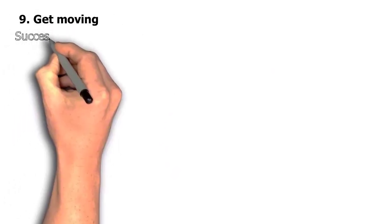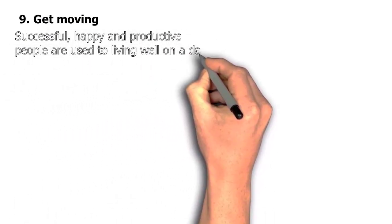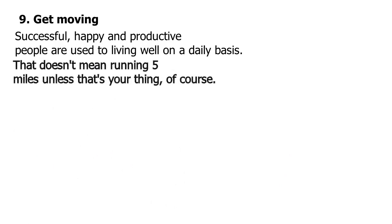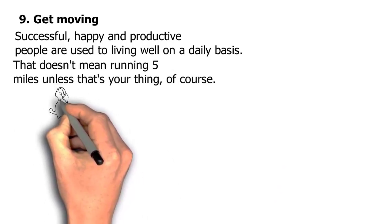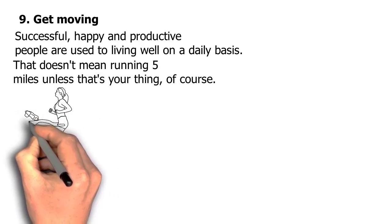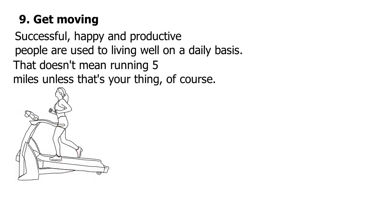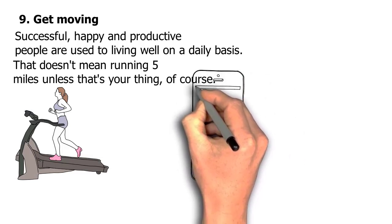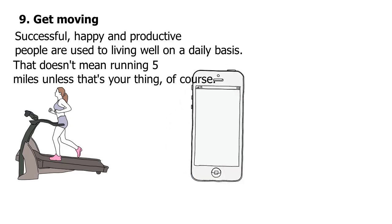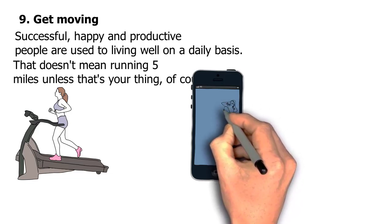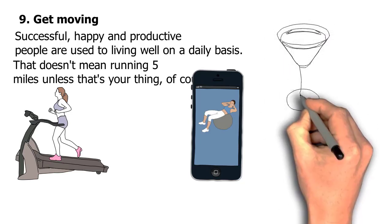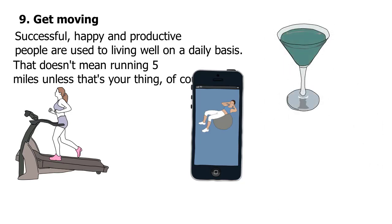Number nine, get moving. Successful, happy and productive people are used to living well on a daily basis. That doesn't mean running 5 miles, unless that's your thing, of course. There are incredible benefits to exercising for 10 minutes, walking for 20 minutes, taking more stairs, or parking your car a little farther away when you need to shop for something important. If you're having trouble kicking a habit, there are many programs and services available to help you. Try fitness trackers like Fitbit or 007 Fitness Tracker. Most air conditioners can be set to vibrate every hour or less to remind you to stay active. That doesn't mean you have to do it every hour or so. Just get up for a glass of water or a quick snack.